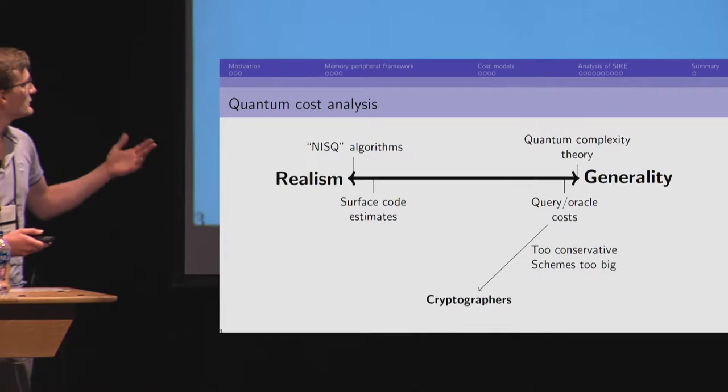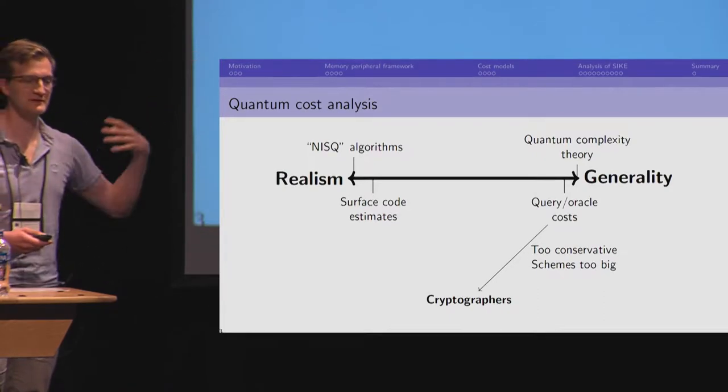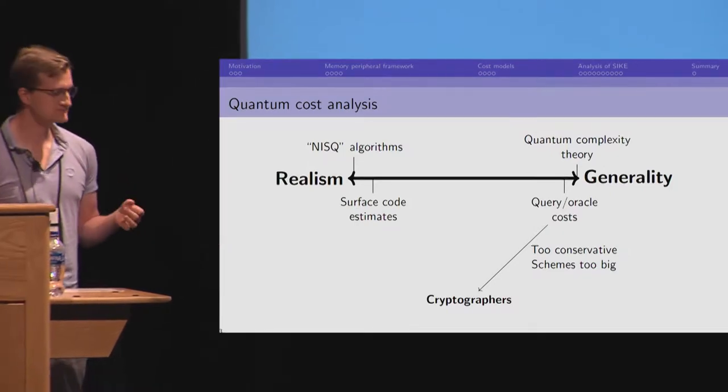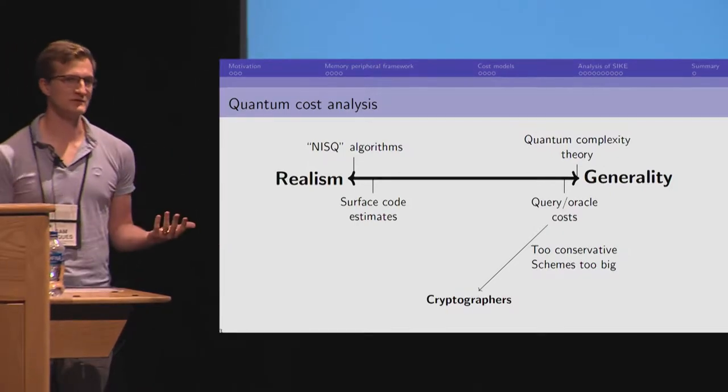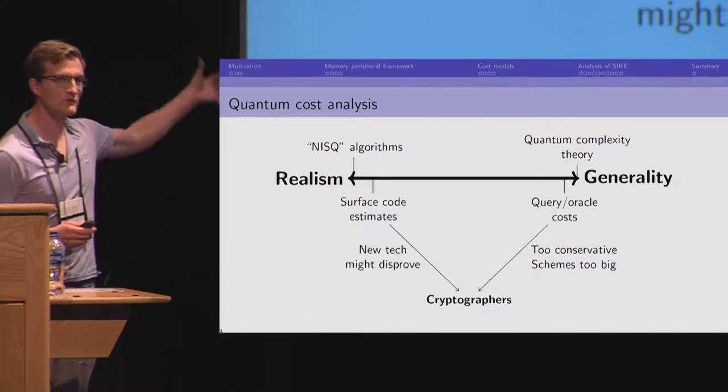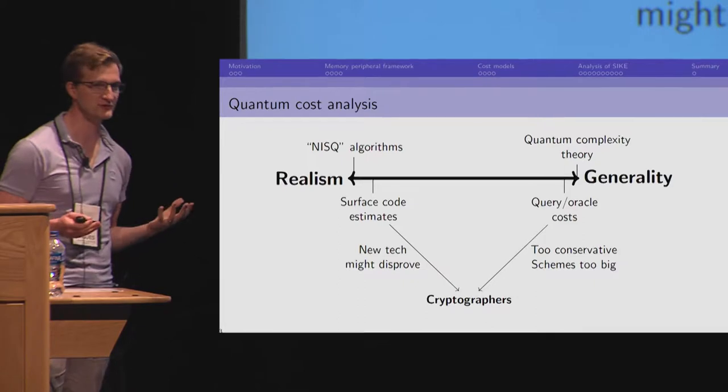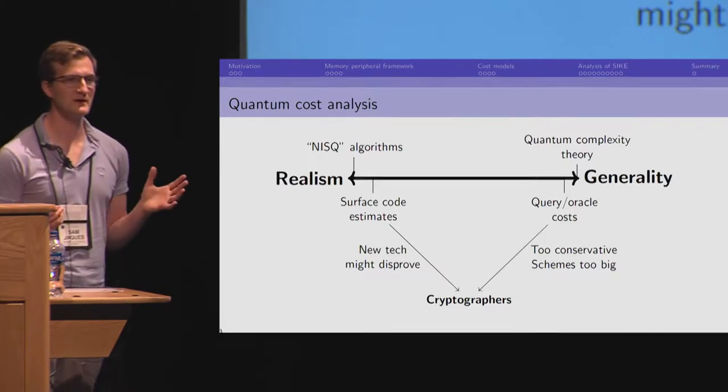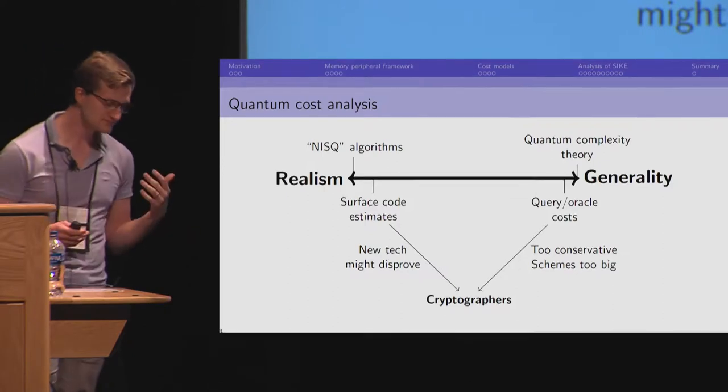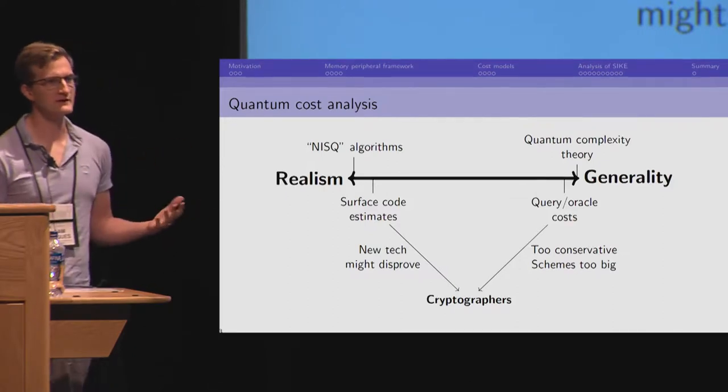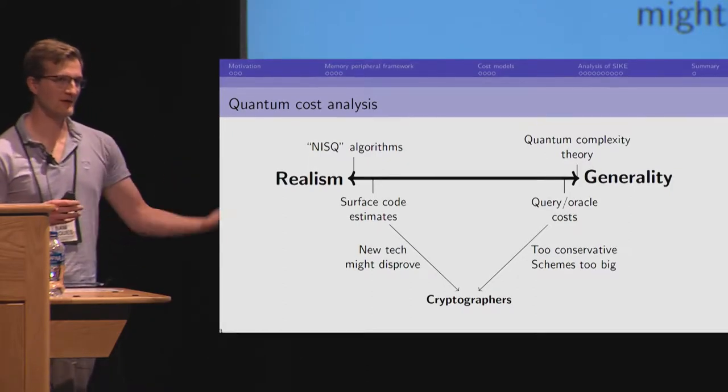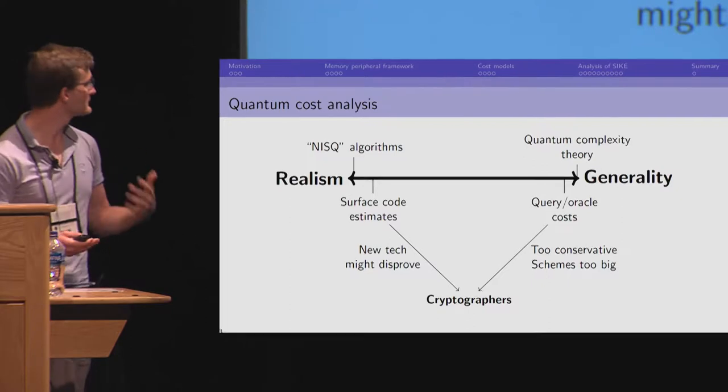As cryptographers, we can draw from these very general results in complexity theory and query costs, but we end up having schemes that are too big because this is too conservative. We think maybe instead we draw from these realistic approaches where people are worrying about what can we run on quantum computers very soon on immediate technologies. But these results don't worry if a new quantum computer will come along that their algorithms don't run on because they'll just write new ones.